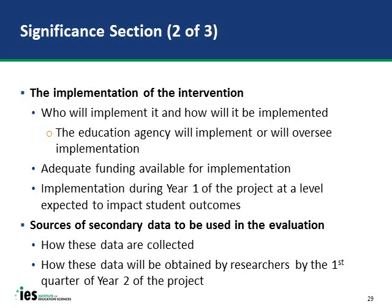Describe how the intervention will be implemented, as the program or policy must be implemented under the education agency's control—either directly or through contracted oversight. Show that adequate funding is available for intervention implementation during year one of the project, which is required. Document why you expect implementation to be high enough to impact student outcomes. Then describe the sources of secondary data to be used, who collects them, and how they will be transferred to the research institution by the first quarter of year two. If the intervention is being implemented for the first time in year one, provide additional evidence it will occur—such as legal authority or a special oversight office.